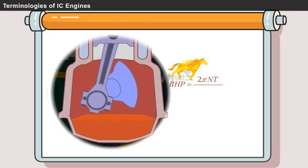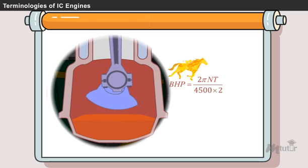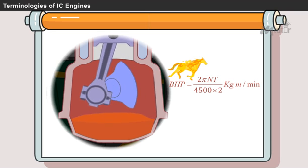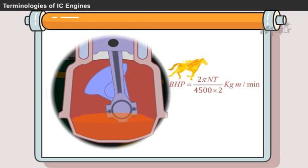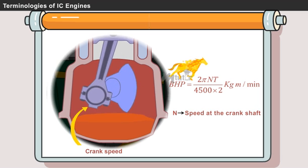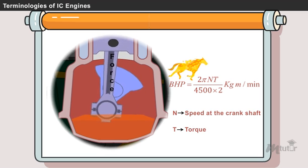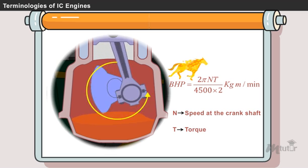BHP is equal to 2 phi Nt divided by 4,500 into 2 in terms of kilogram meter per minute. Where N is the speed at crankshaft and T is the torque, which is the force that causes the rotational motion.